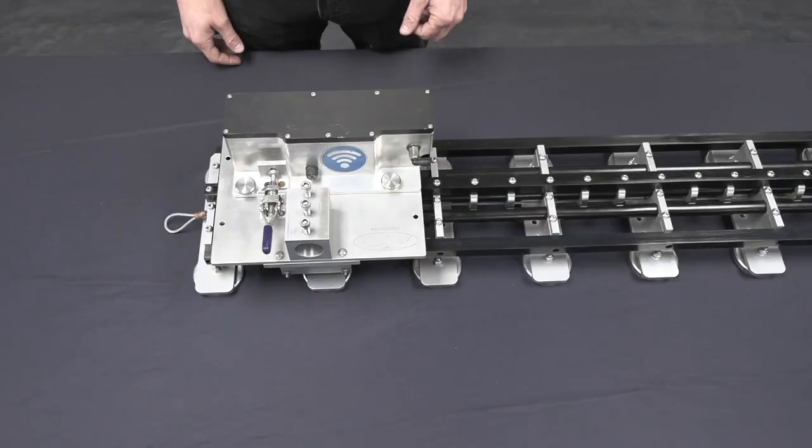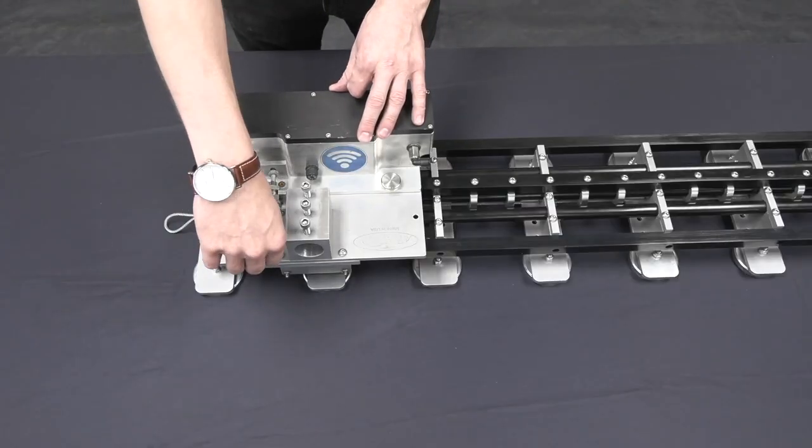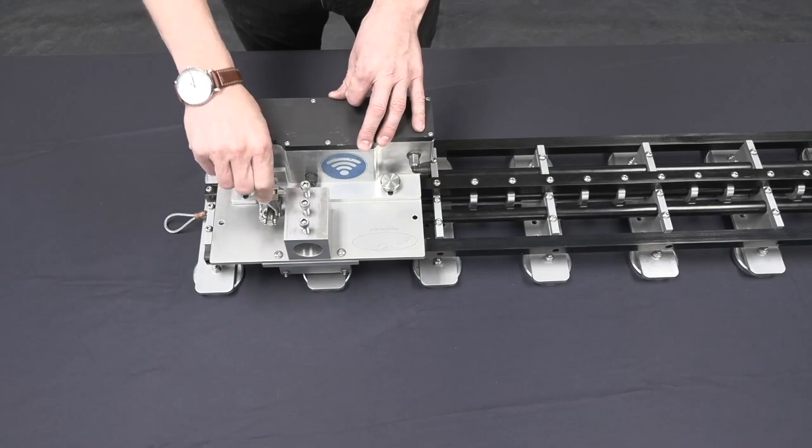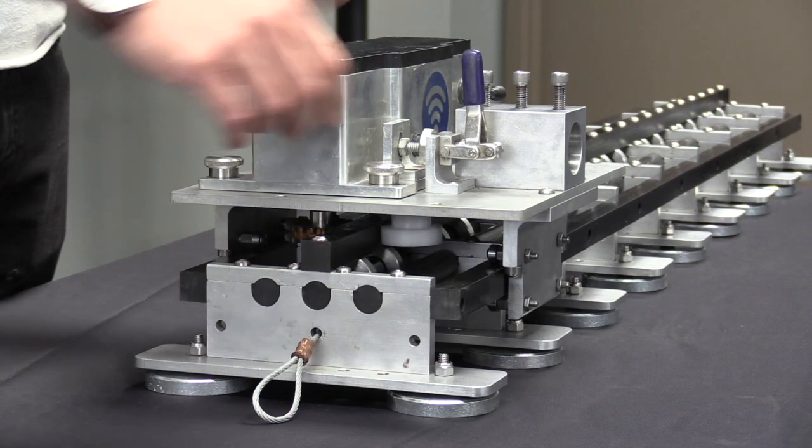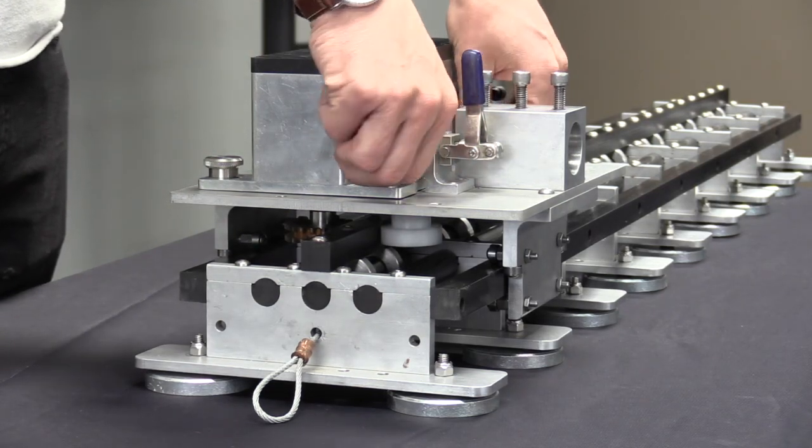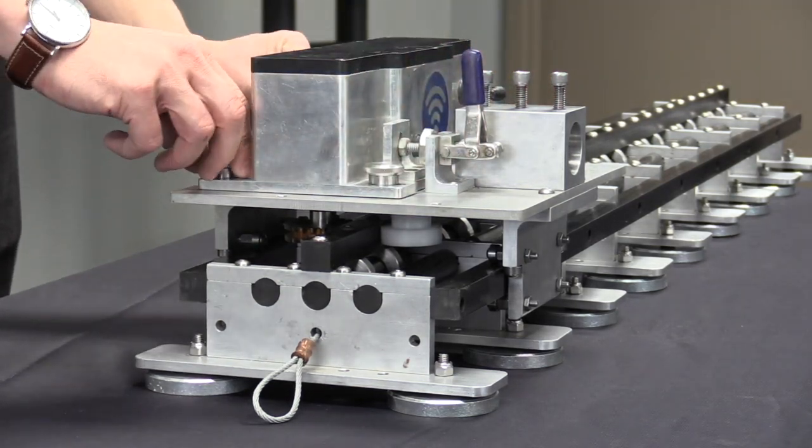To engage the bug for operation, grab the toggle clamp, secure into place until it clicks. This will engage the drive gear into the side of the drive rail. Following that, tighten each one of these thumb screws until they are secure.